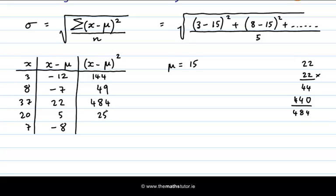When we square 5, we get 25. And when we square minus 8, we get 64.